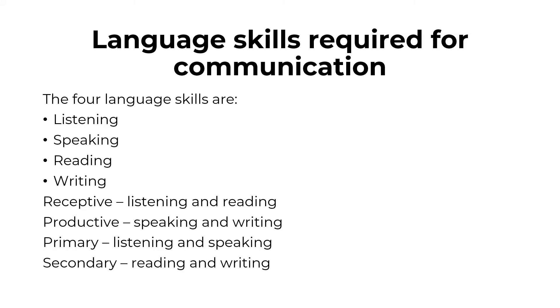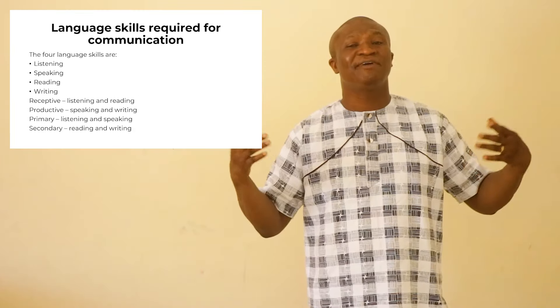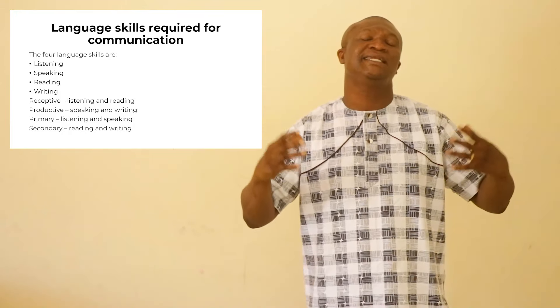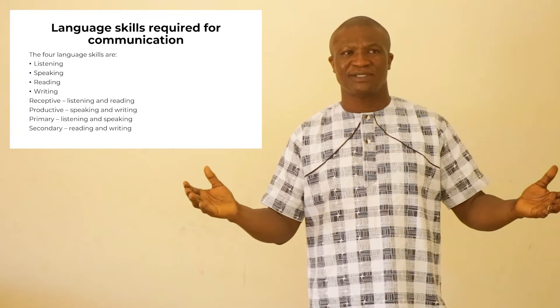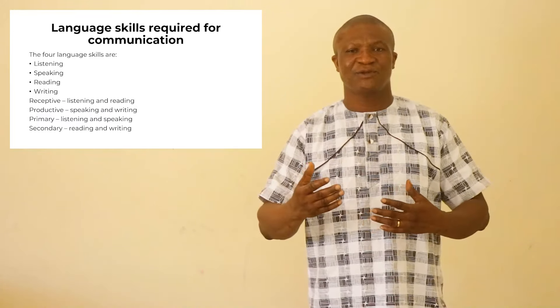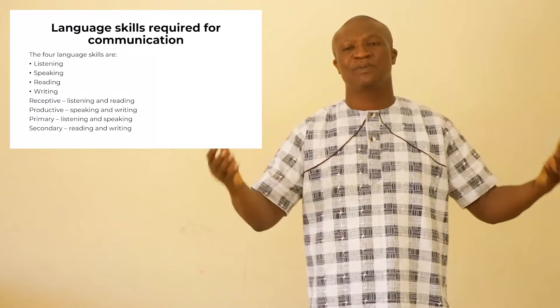Now let's look at the language skills involved in the communication process. There are basically four language skills, and this is the order in which they are acquired. The first language skill we acquire is listening. When a baby is born, the first skill acquired is the ability to listen and distinguish between sounds. Then, after some time, that child learns to speak. So the next language skill is speaking.